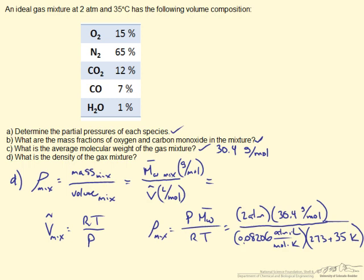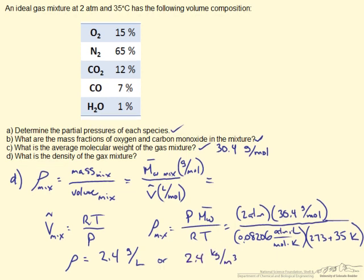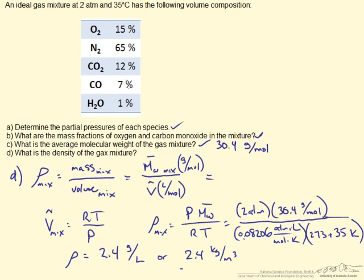It's important to put all your units here so you can see what our density ends up actually being. In this case you should get a value of around 2.4 grams per liter, or if we rewrite those in some units that might look more familiar, 2.4 kilograms per meter cubed.